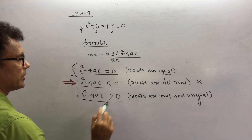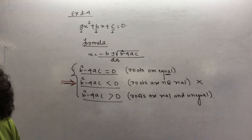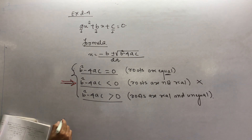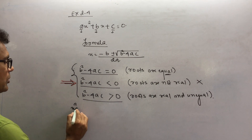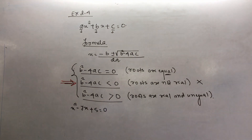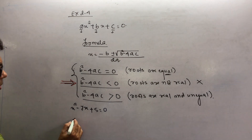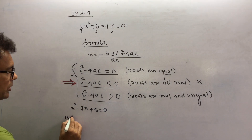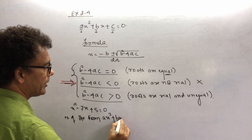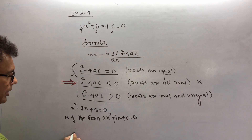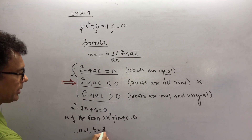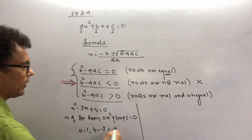The first example in Exercise 2.4 is very easy. You have the equation x² − 7x + 5 = 0. Comparing it with ax² + bx + c = 0, you get a = 1, b = −7, and c = 5.